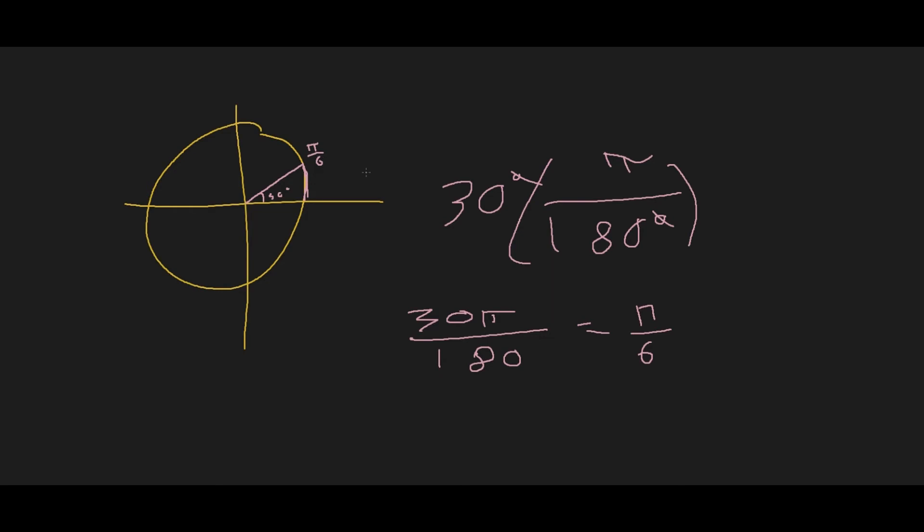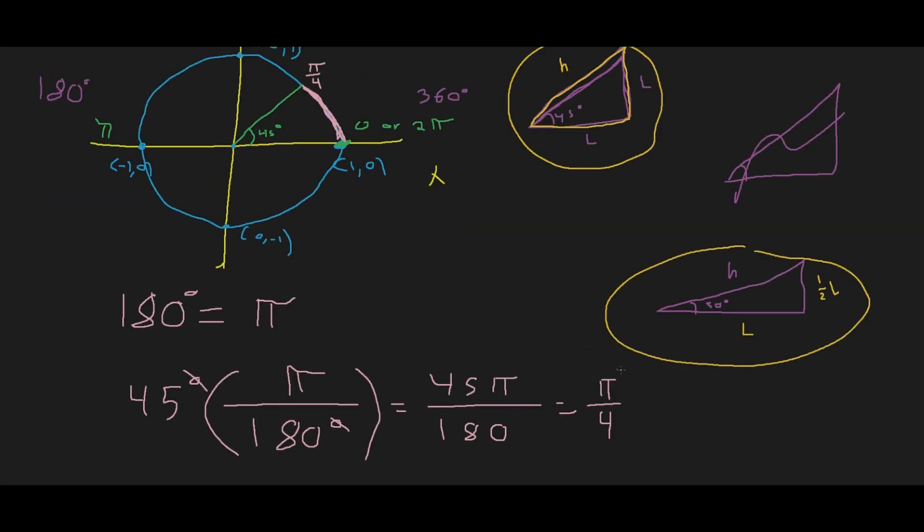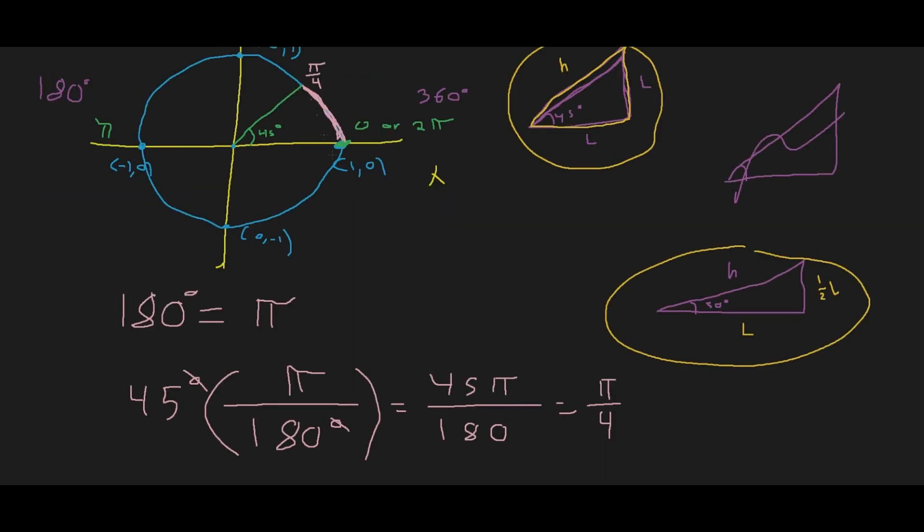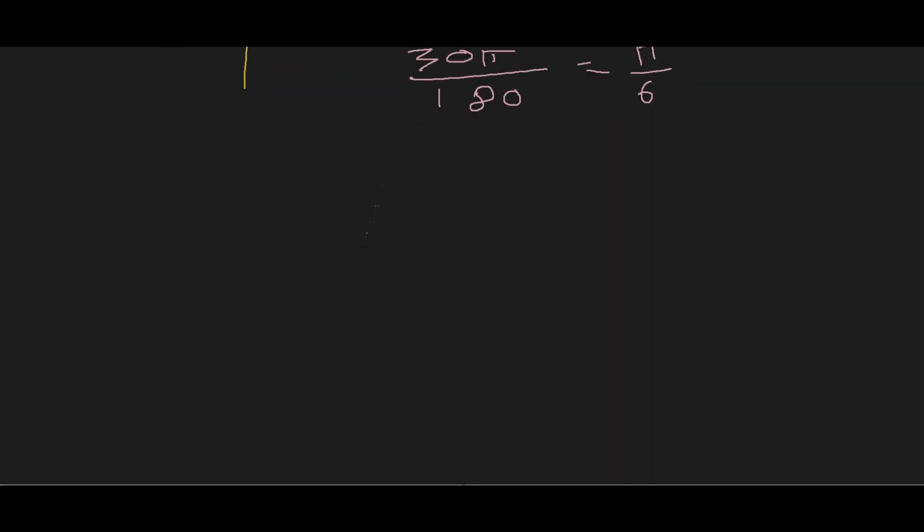Well, we're going to do the exact same method we did. We're going to do 30, and we're going to put the 180 on the bottom so that the degrees can cancel out. Put the π on the top. We're going to get 30π over 180. If we simplify that, 30 divided by 180, just using a calculator, we get π over 6. That tells me this length right here is π over 6, which actually makes sense. It should be smaller than π over 4. Now, if I do 3.14 divided by 6, that means since we're using centimeters as our example, this length right here is 0.52 centimeters in length.